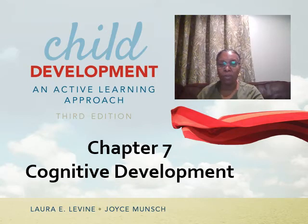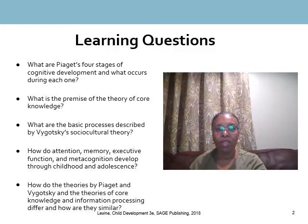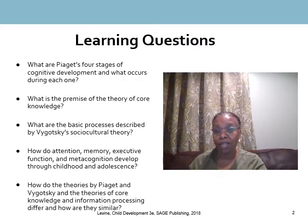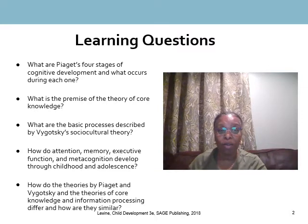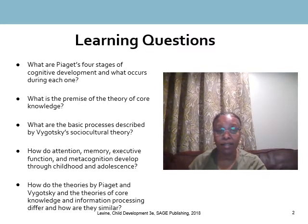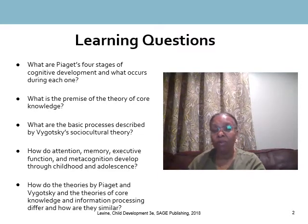This is Chapter 7, and we're going to take a look at Cognitive Development. Our learning objectives include Piaget's Four Stages of Cognitive Development, the theory itself and criticisms that come with it. We'll also look at Vygotsky's Sociocultural Theory, attention, memory, executive functioning, and metacognition from childhood into adolescence, and then compare Piaget's and Vygotsky's theories in terms of information processing.